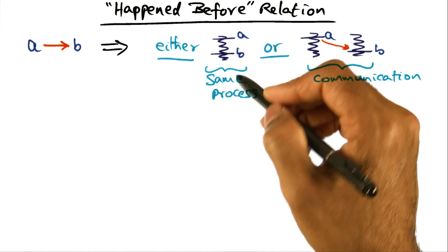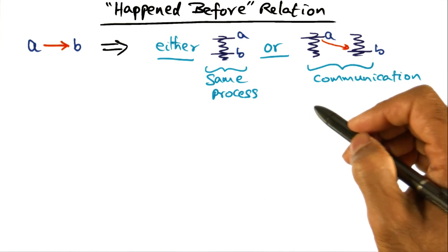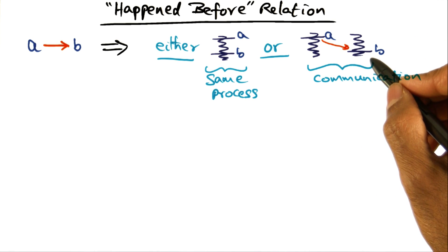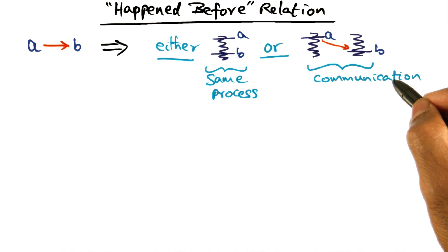One is that A and B are events in the same process, or A is the act of sending a message, and B is the act of receiving a message, the same message on a different node of the distributed system.